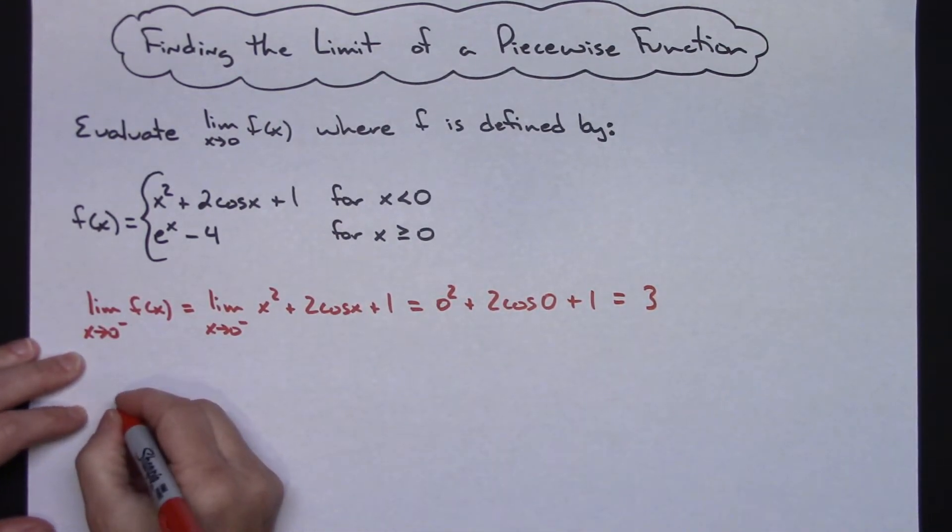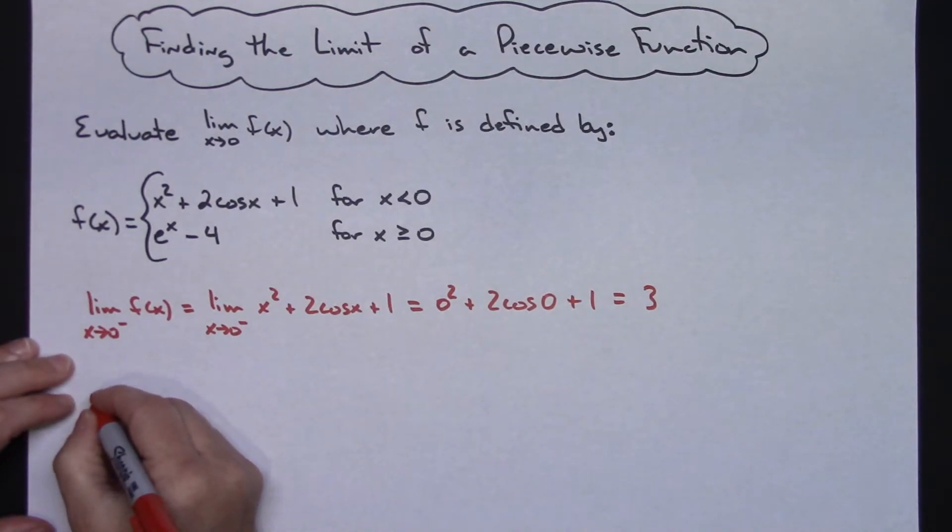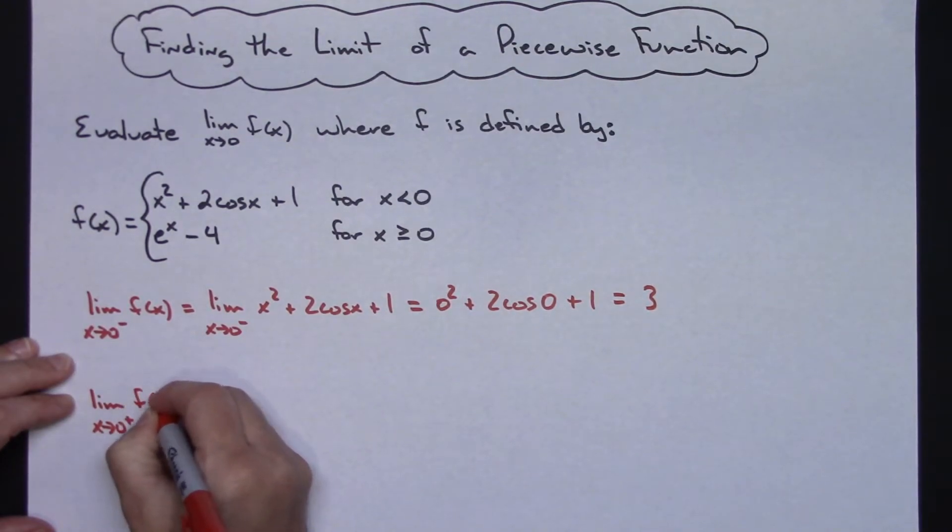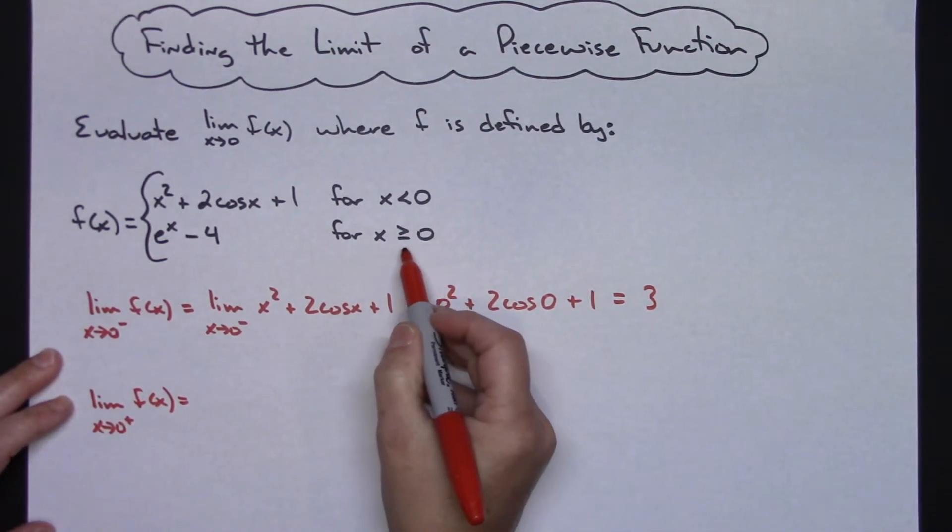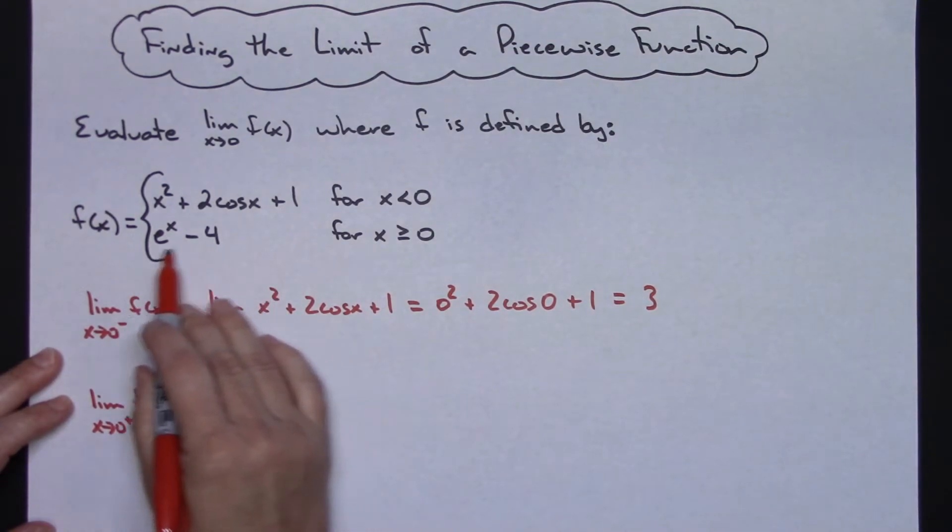Now I'm going to go through and evaluate this limit coming from the right. So the limit as x approaches 0 from the right of f(x). I'm going to come back up here. I'm going to look at my conditions - x is greater than or equal to 0 means I'm coming from the right. So this particular expression will be what I'm going to evaluate.